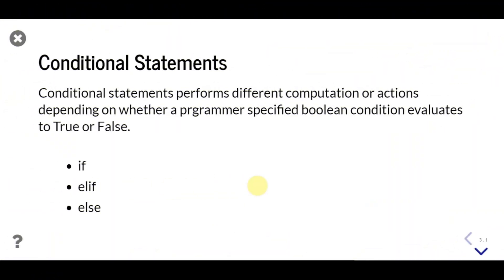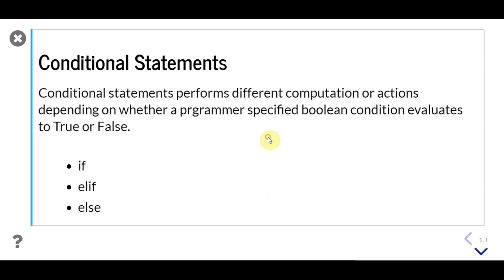Welcome. In previous videos we learned about different data types and operators in Python language. In this video, we'll learn about conditional statements. Conditional statements perform different computation or actions depending on whether a programmer's specified boolean condition evaluates to true or false. That means it controls the flow of execution of your program based on some condition.